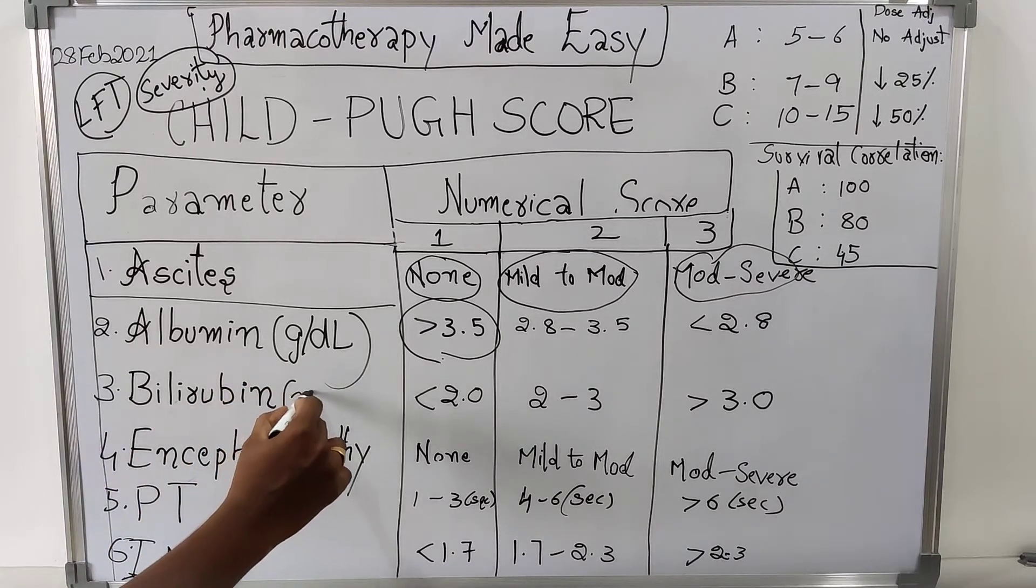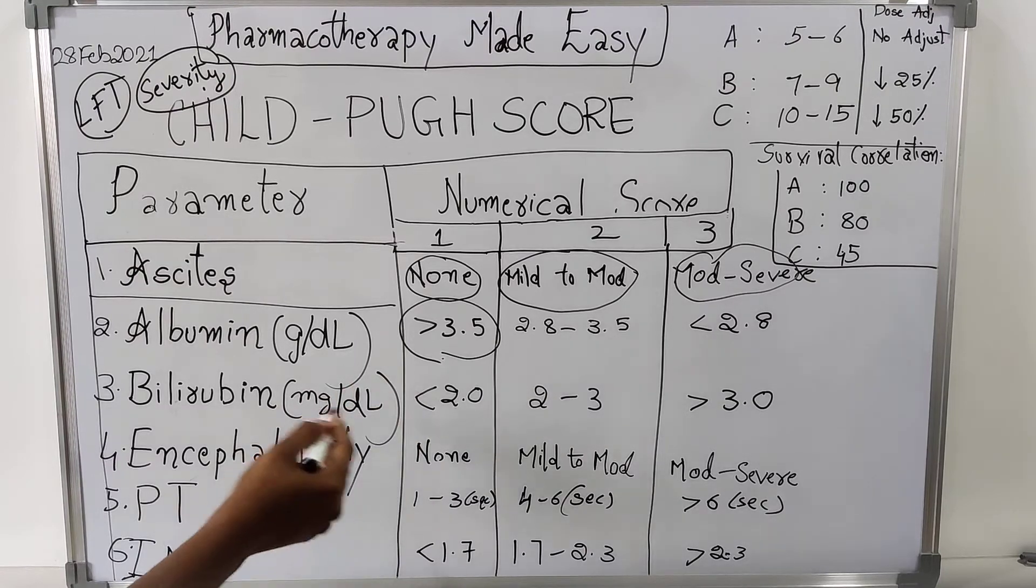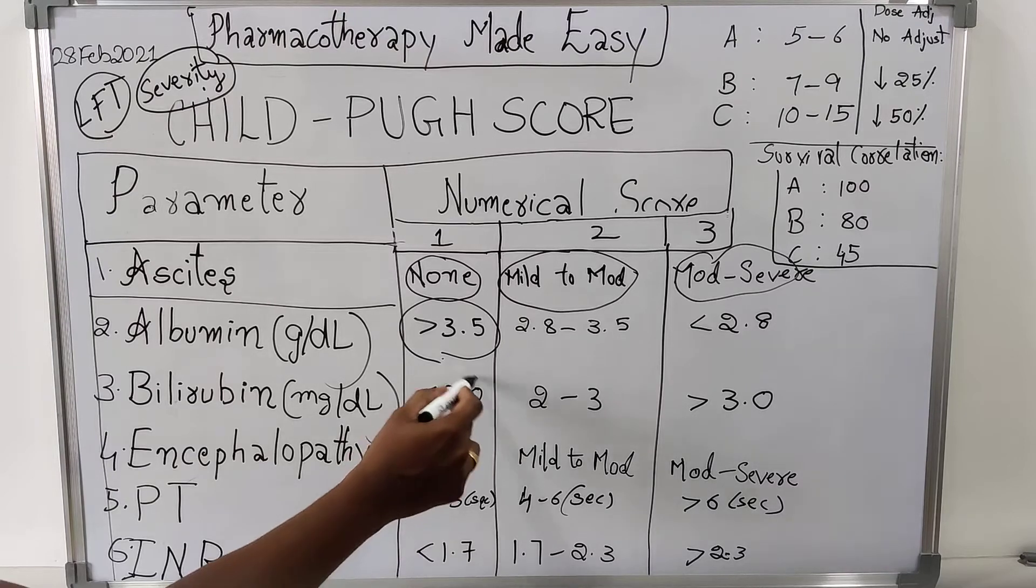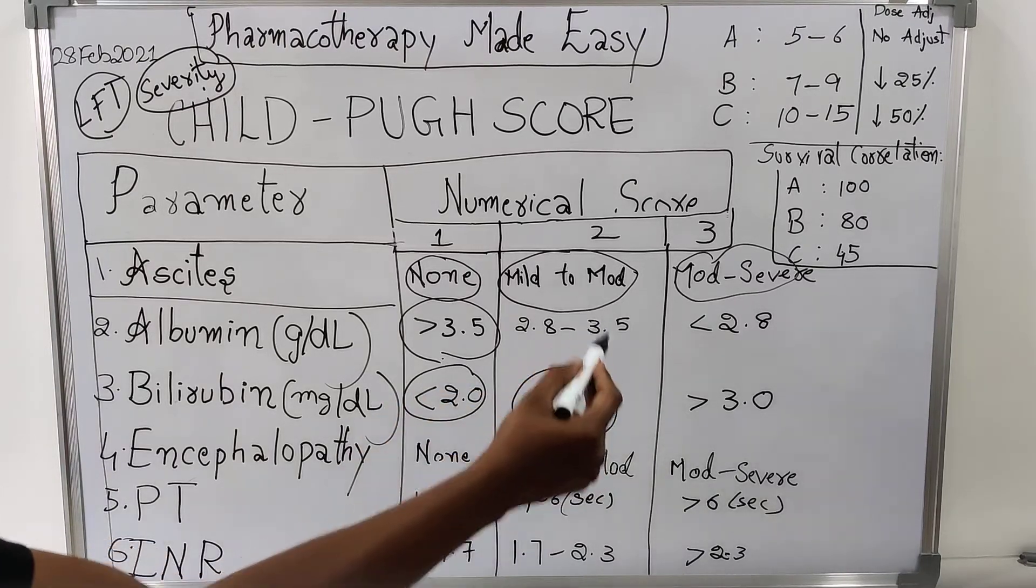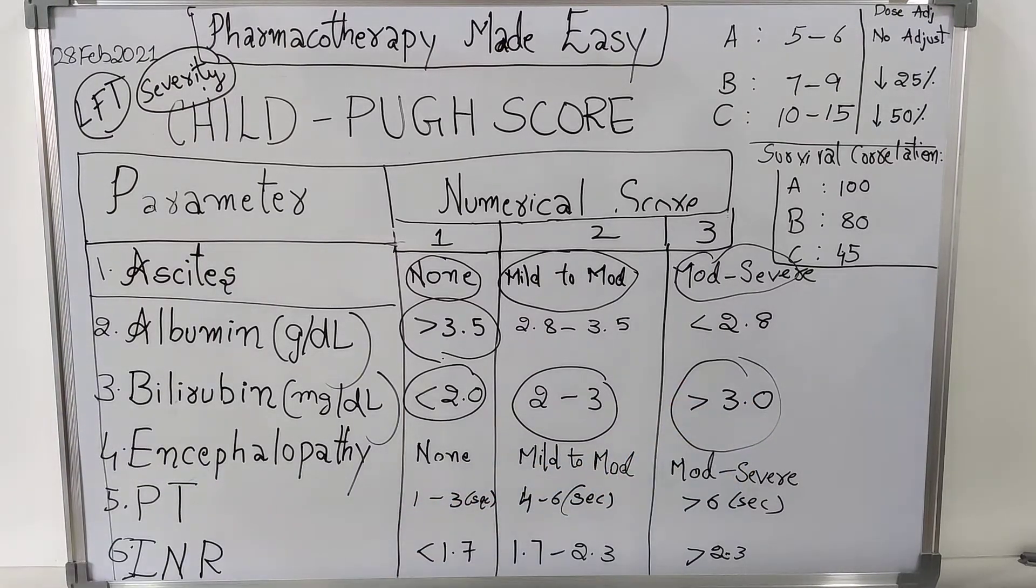In the same way, bilirubin will be estimated in milligrams per deciliter. If the concentration of bilirubin in serum is less than 2, score will be 1. If it is in the range of 2 to 3, score will be 2. If it is greater than 3.0, score will be 3.